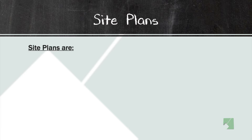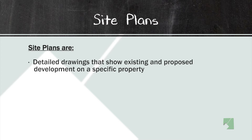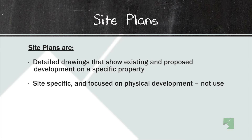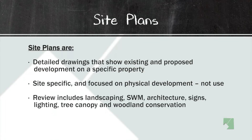Site plans are detailed drawings that show existing and proposed development on a specific property. They're site-specific and focused on physical development, not use. Use is determined when you put the zoning on the property. Site plans are used to show where you want the building placed and where parking is going to be. Site plans are very physical.